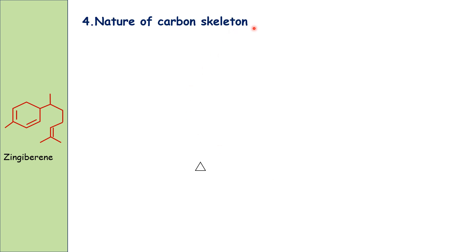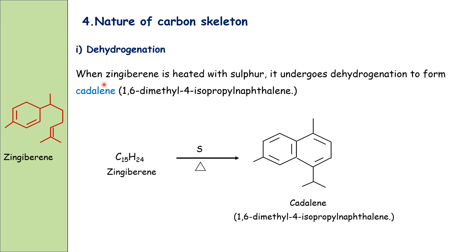Nature of the carbon skeleton — dehydrogenation reaction: when gingivirine is heated with sulfur, it undergoes dehydrogenation and forms cadalene, that is 1,6-dimethyl-4-isopropylnaphthalene. This reaction indicates the type of carbon skeleton present in gingivirine.